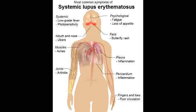What is systemic lupus erythematosus? Systemic lupus erythematosus is a systemic autoimmune disease in which the immune system attacks the body's cells and tissues, resulting in inflammation and tissue damage. This is a type 3 hypersensitivity reaction in which antibody immune complexes participate and cause further immune responses.